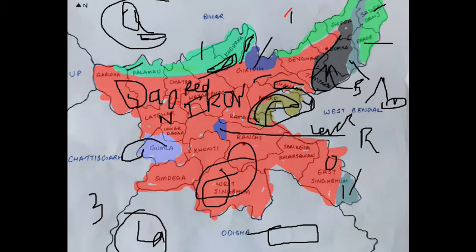The sixth type is alluvial soil. The alluvial soil — shown as the green portion on the map — is considered the newest in origin in Jharkhand and the most important soil group of India.